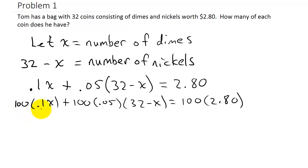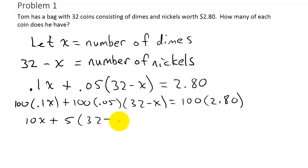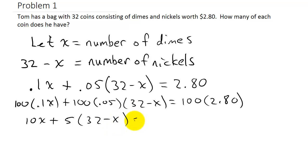Multiplying 0.1 by 100 gives 10x. Multiplying 0.05 by 100 gives 5, so we have 5 times (32 minus x). Make sure you only multiply the 100 times the 0.05 to get 5 — do not distribute the 100 to the 32 and x. Then distribute the 5, and 2.80 times 100 equals 280.